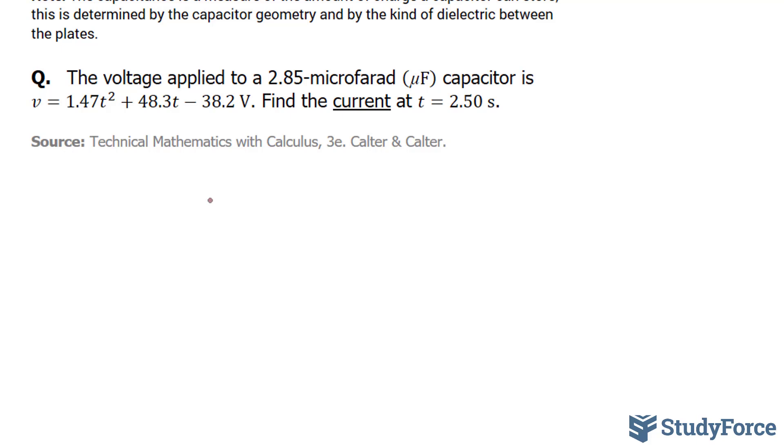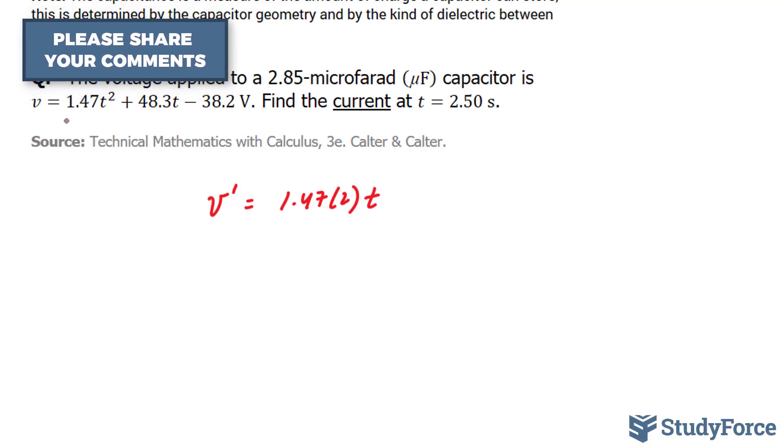The derivative will be represented by V prime, and that's equal to 1.47 times 2T. What I did here was use the power rule. To use the power rule, you take this exponent and multiply it to the coefficient and subtract the exponent by 1, which is exactly what I did.